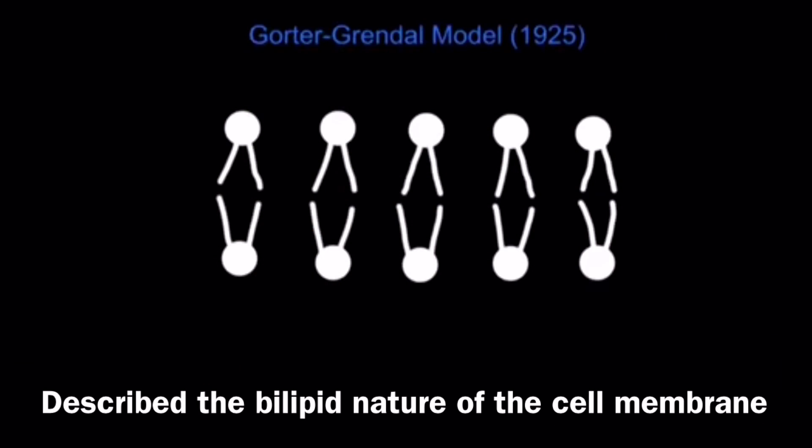The Davison-Danielli model of the cell membrane built on Gorter and Grendel's model from 1925. Gorter and Grendel described the bilipid nature of the cell membrane, essentially the phospholipid bilayer, as they found that red blood cell membranes were formed by a fatty layer that was only two molecules thick.